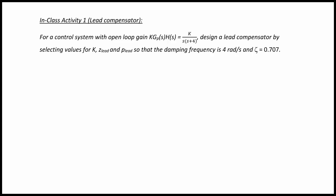For a control system with an open loop gain k, gp of s, h of s equal to k over s times s plus 4, design a lead compensator by selecting values for k, z lead, and p lead so that the damping frequency is 4 radians per second and zeta is equal to 0.707.